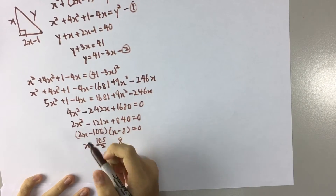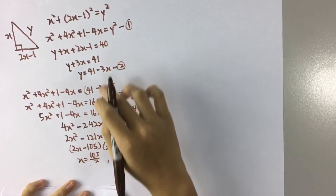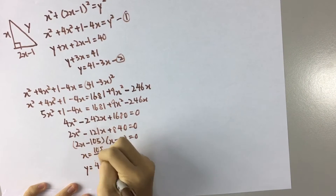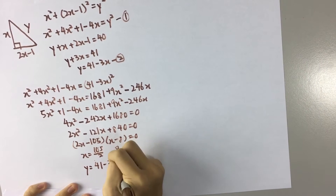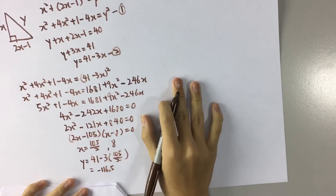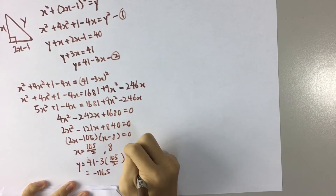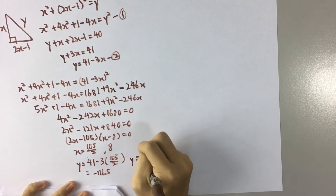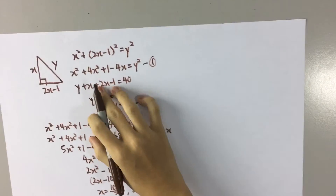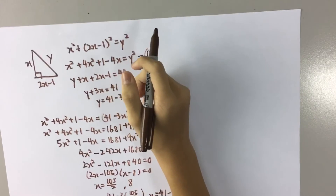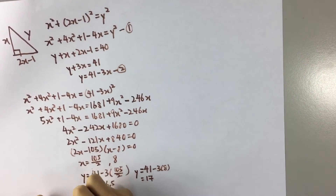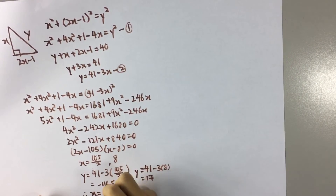For the y value, you need to substitute x equals 105 over 2 or x equals 8. So y will be negative 116.5, or y equals 41 minus 3 times 8, which gives y equals 17. Since it's a triangle and the perimeter will never be negative, x and y must be positive. So x equals 8 and y equals 17.